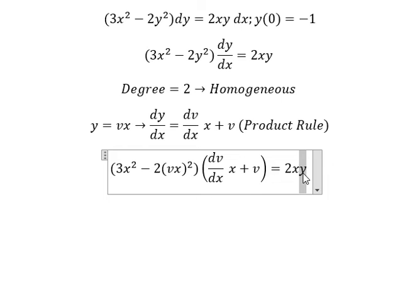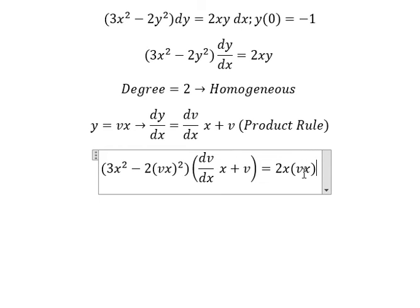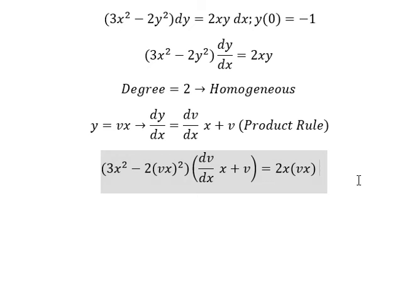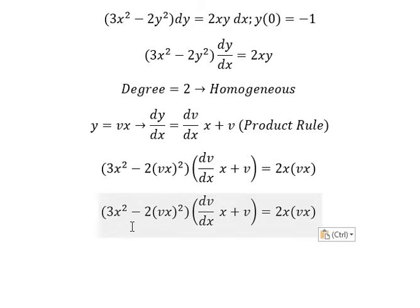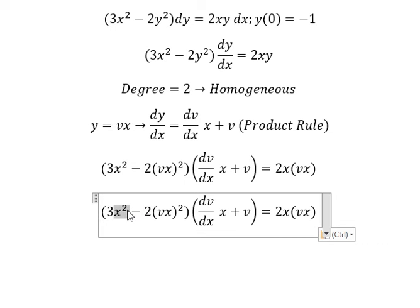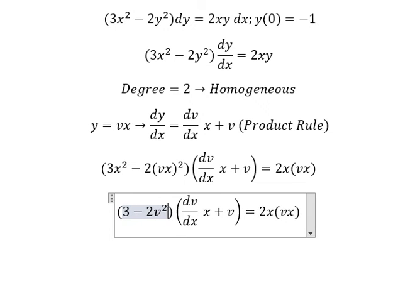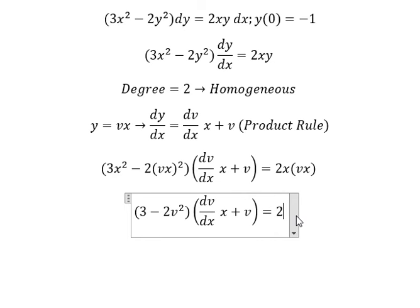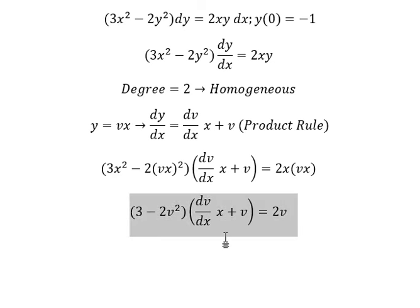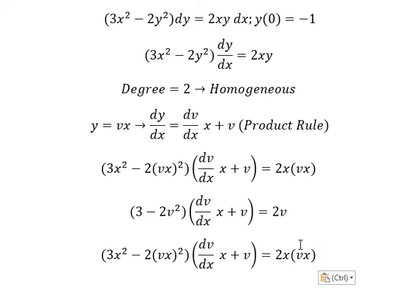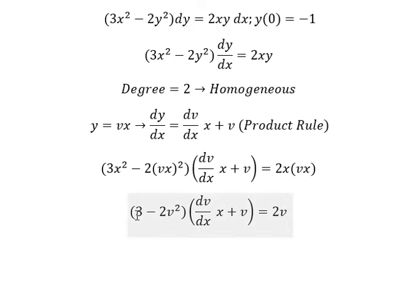We change y over dx by this expression. Next we simplify x squared for both sides. Then we divide both sides by 3 minus v squared.